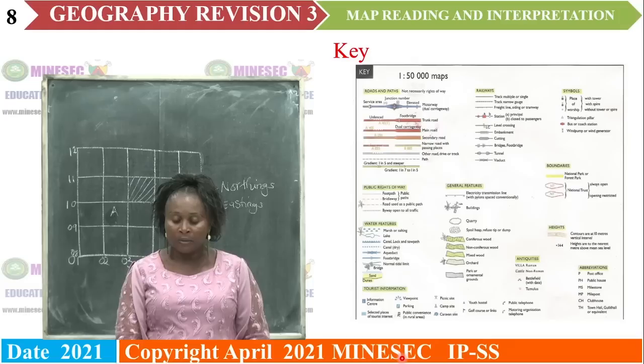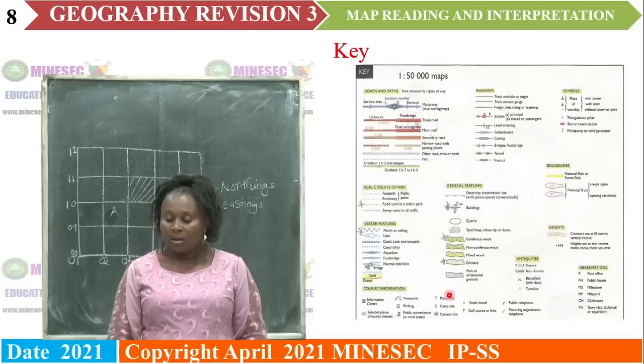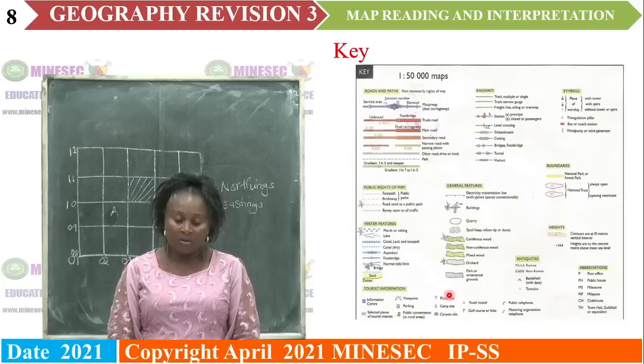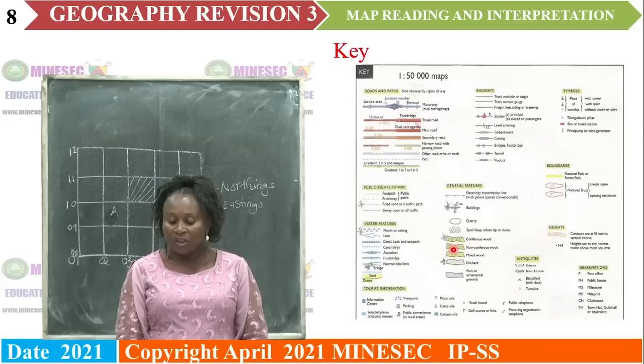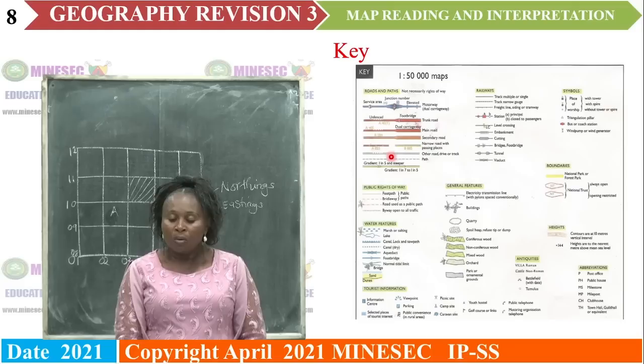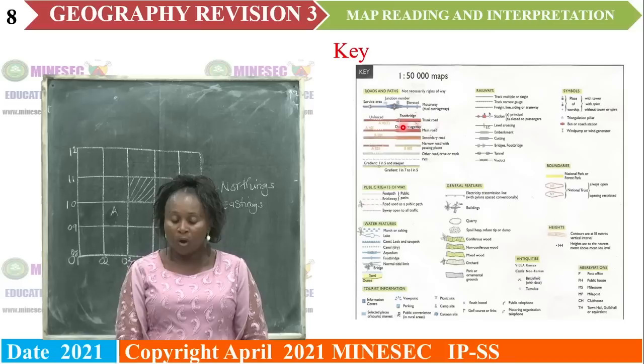On this key, there are some conventional colours used to represent specific features. For instance, vegetation is represented in colour green. If we go to water bodies, it is represented in colour blue. Roads use thick lines for communication, and thin red lines are used for contours.